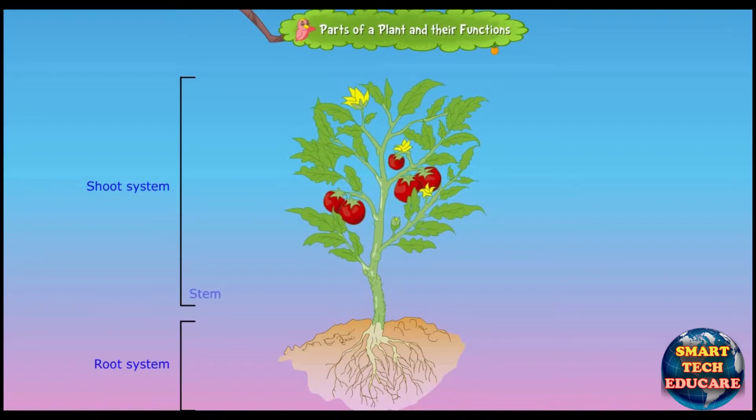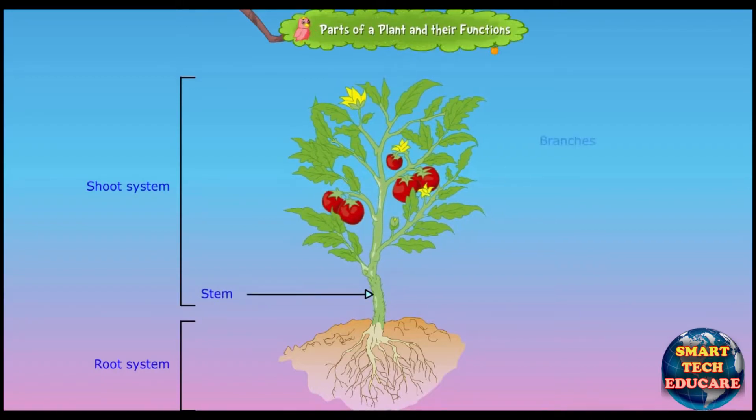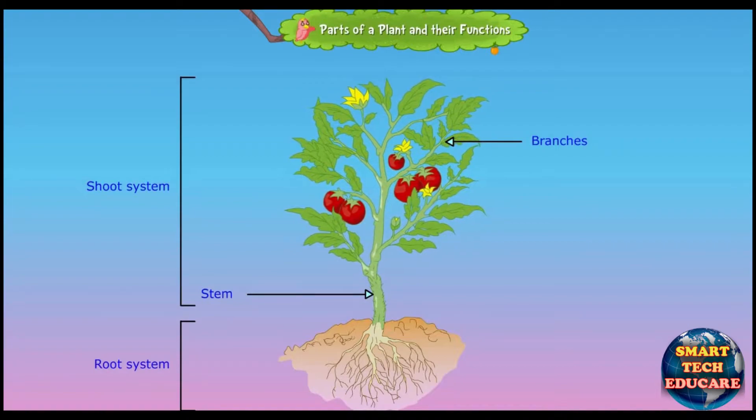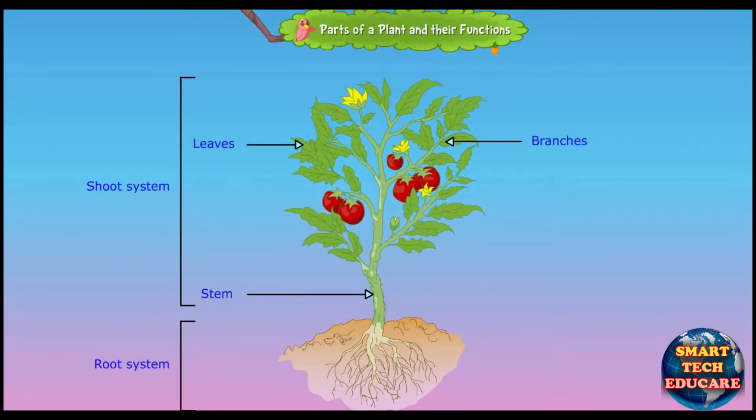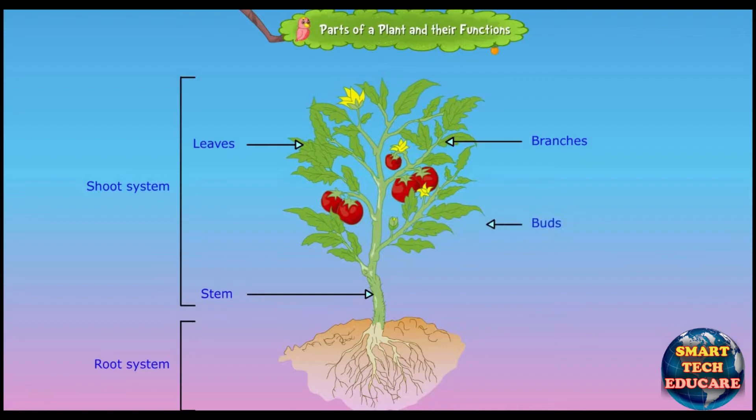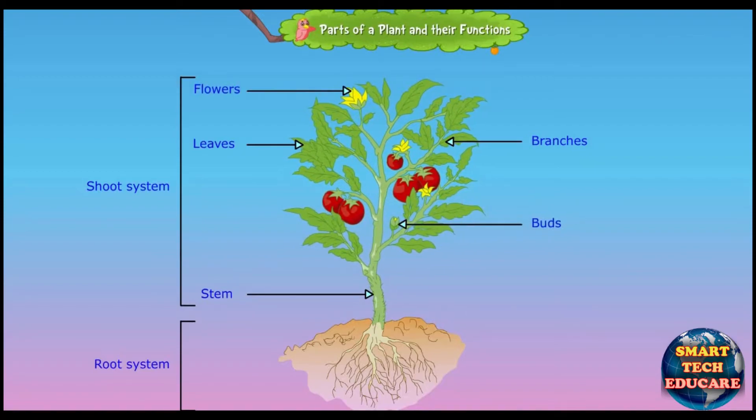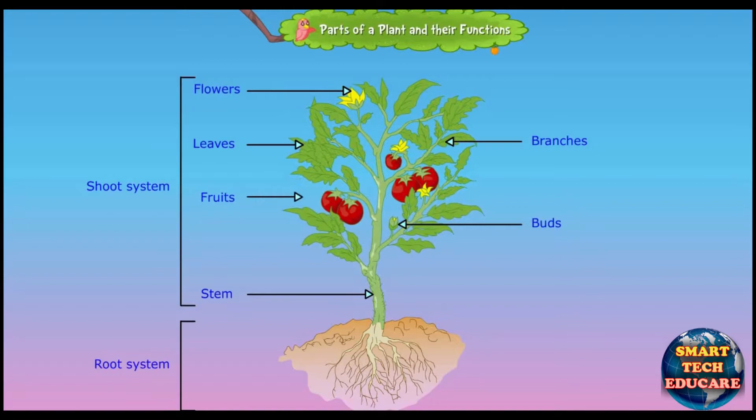The shoot system consists of stem, branches, leaves, buds, flowers, roots and seeds.